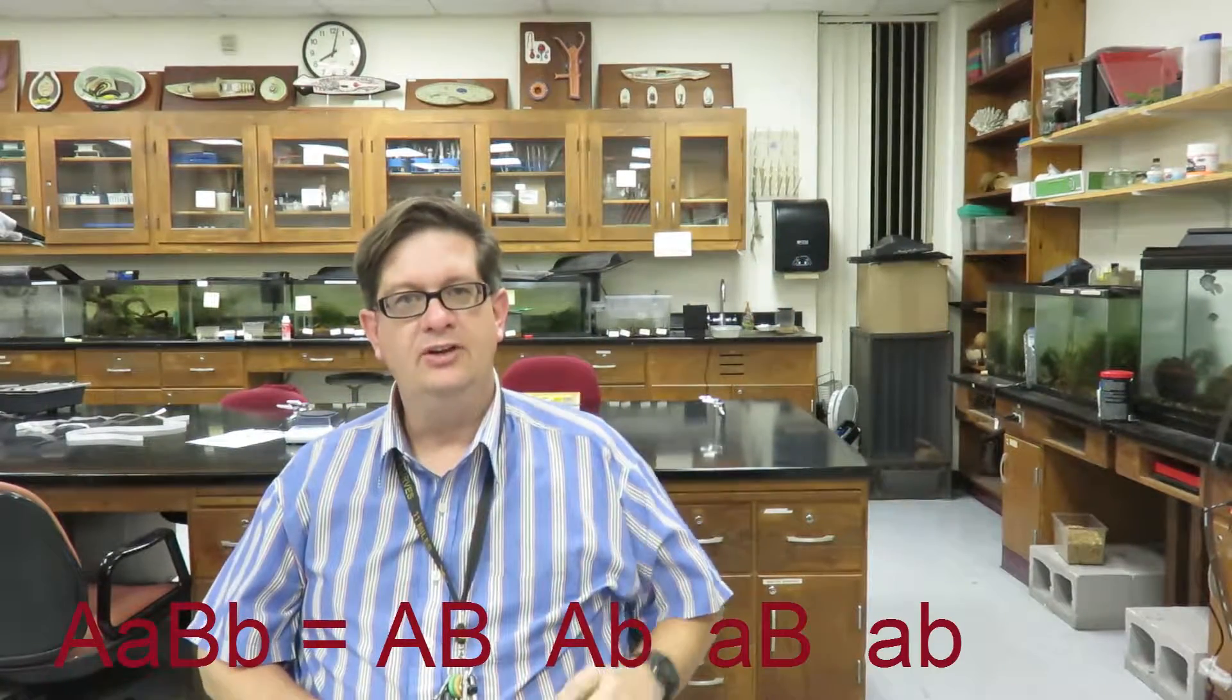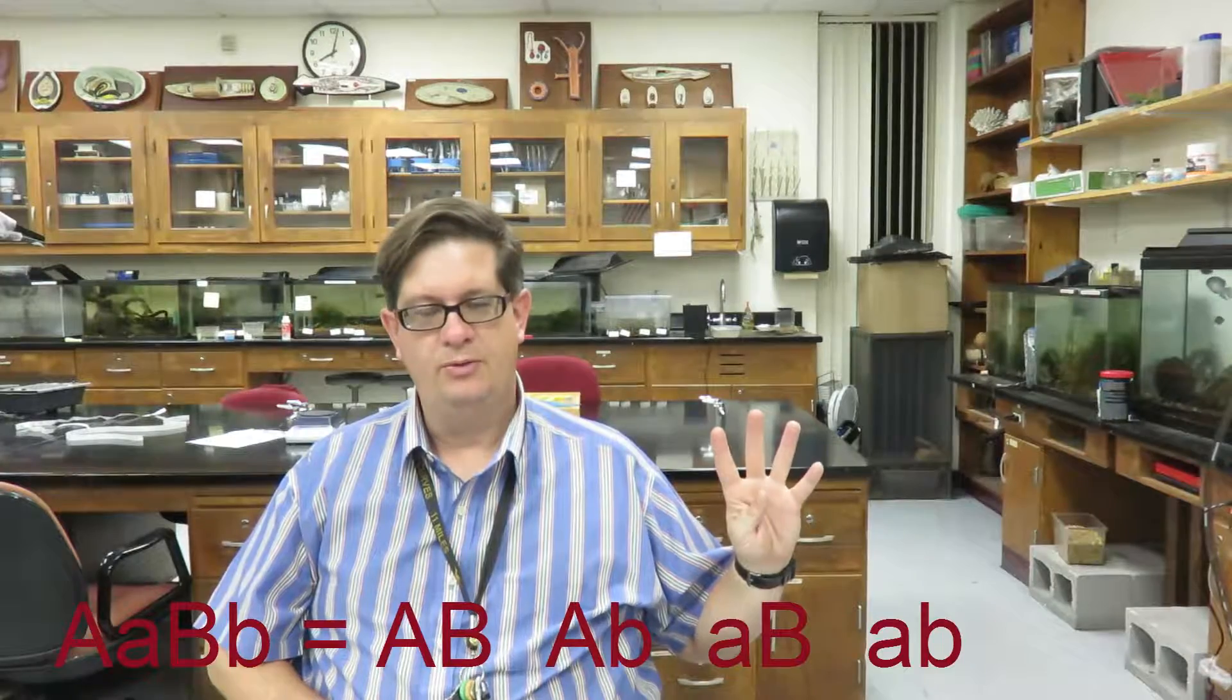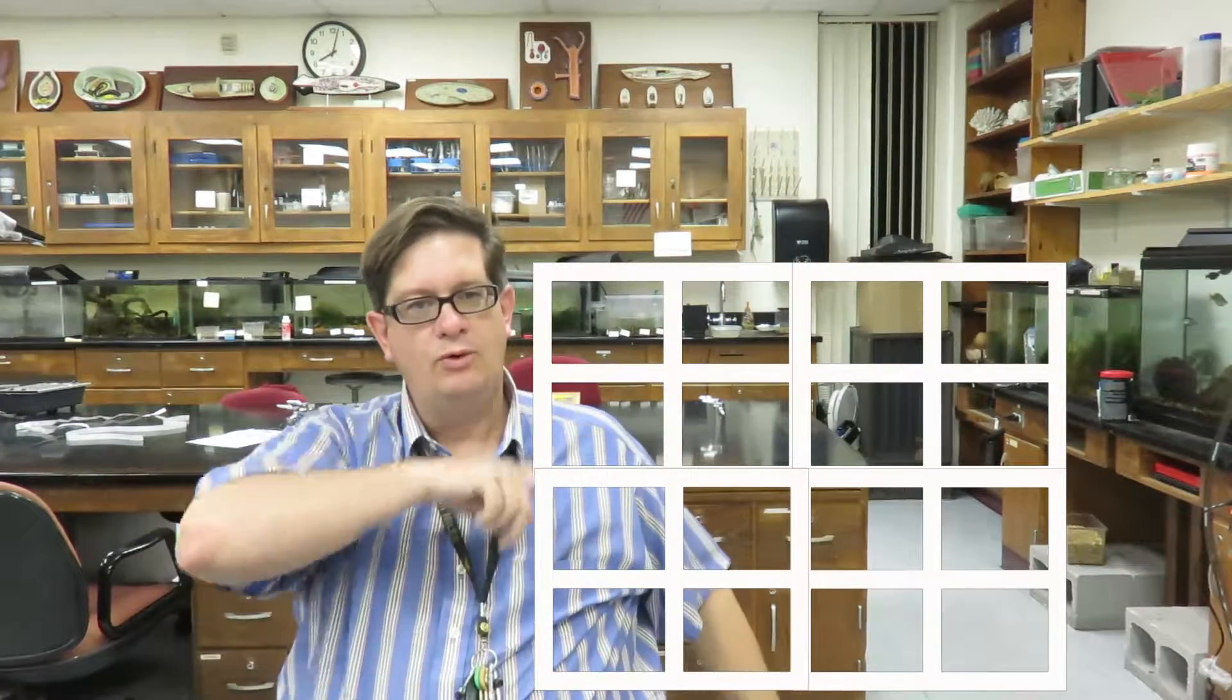If you have two genes, there are four possible gametes for the parent. And what that means is that you'll have four columns and four rows.